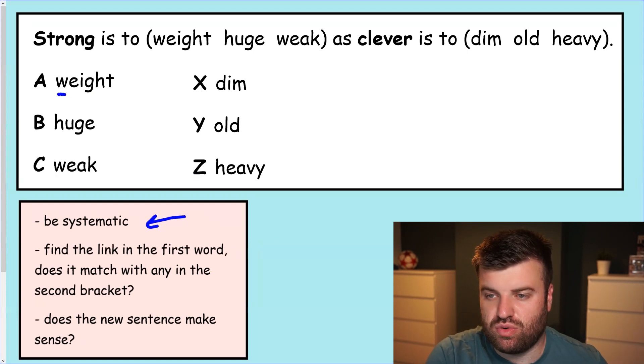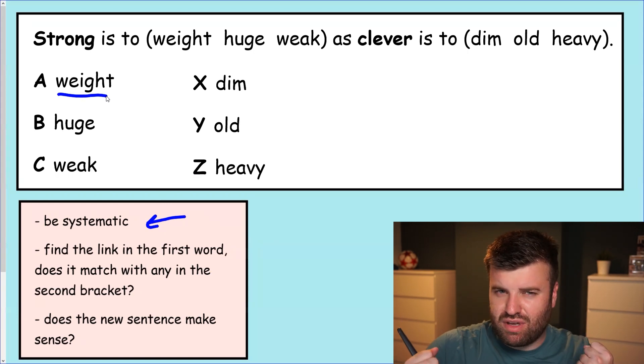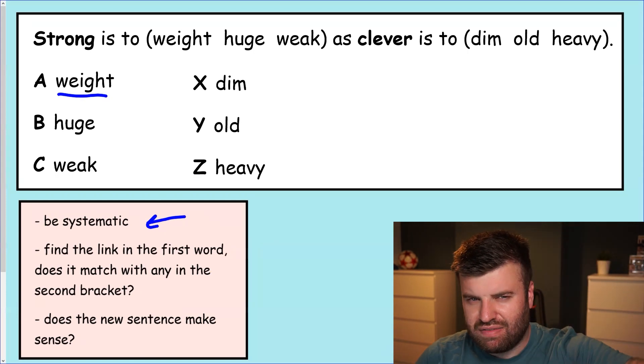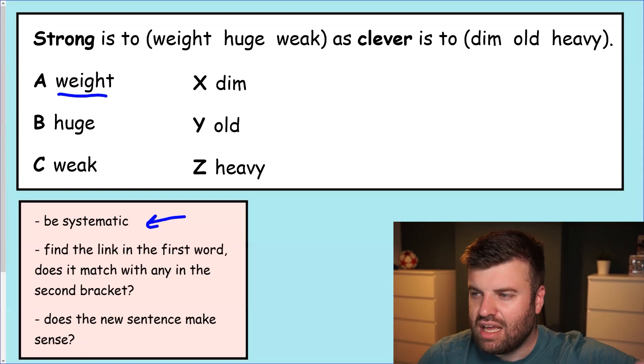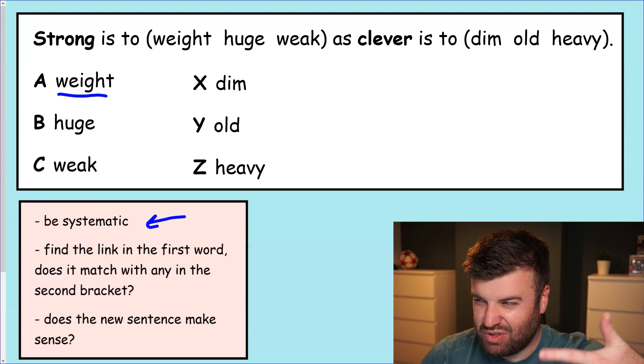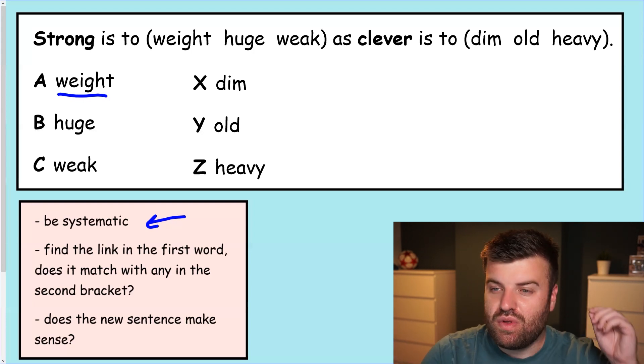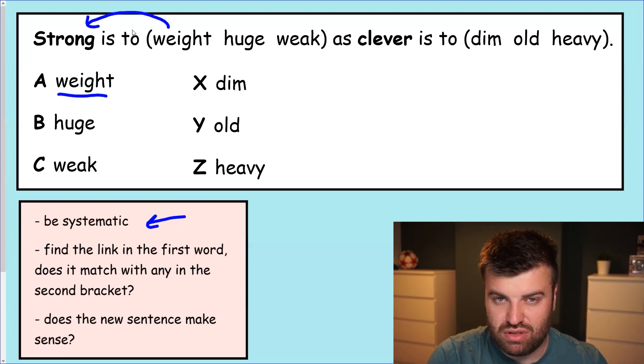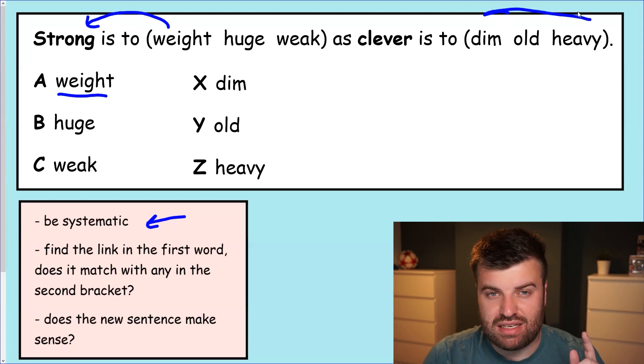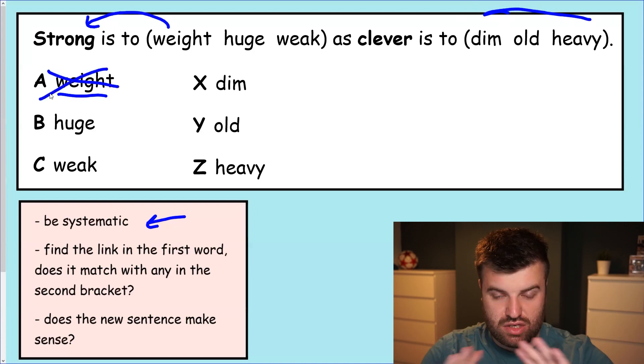We'll start with strong is to weight. I guess if you're strong you can lift heavier things, heavier weights if you go to the gym. So let's see if there's a link there. If you're clever you can do more dim, do more old, do more heavy. It doesn't make any sense. So the way that weight goes with strong for this question does not match with any of these in the second set of brackets. So we can actually eliminate weight as an option. It's not going to be A.